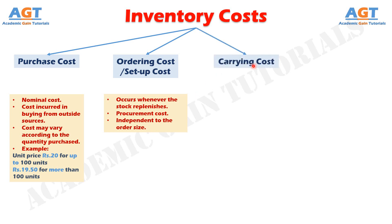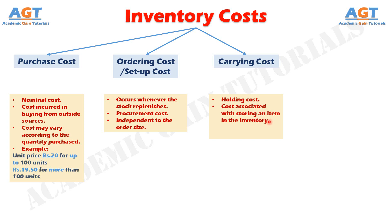Component number three is Carrying Cost. Carrying cost is also known as holding cost, and it refers to the cost associated with storing an item in the inventory. It is proportional to the amount of inventory and the time taken to hold that inventory. The elements of carrying cost include Opportunity Cost, Obsolescence Cost, and Deterioration Cost. The carrying cost is expressed in terms of rate per unit or as a percentage of the inventory value.